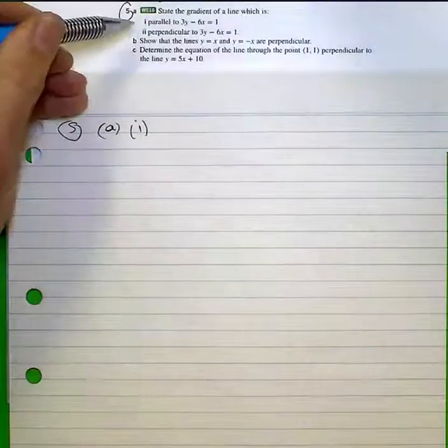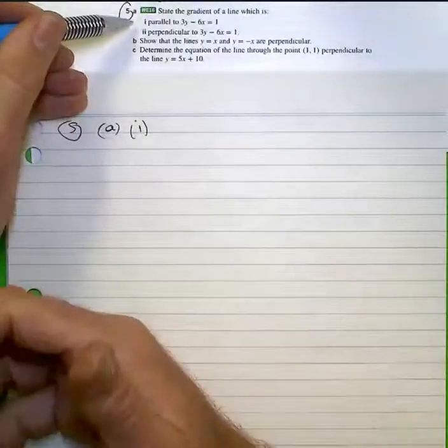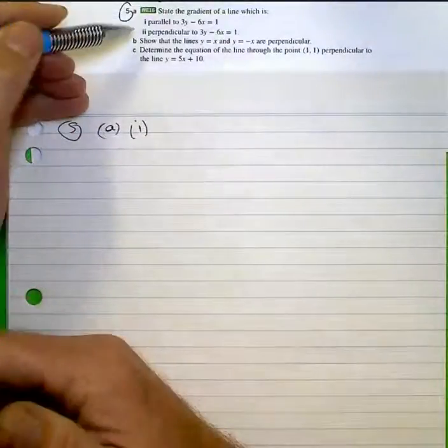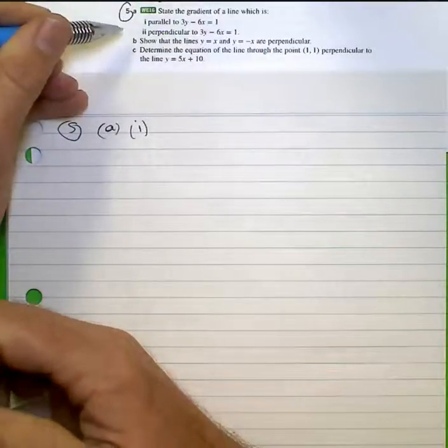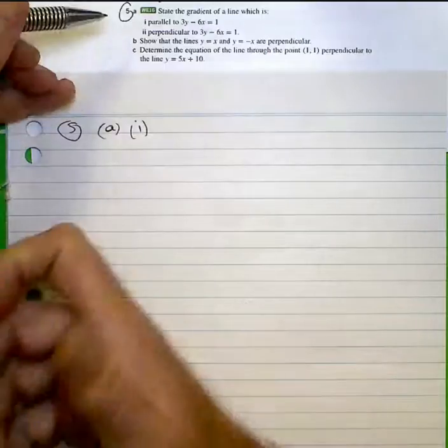In question 5, you're asked to find information about gradients. Gradients are parallel if they have the same gradient, perpendicular if it's negative 1 or the negative inverse of the gradient.